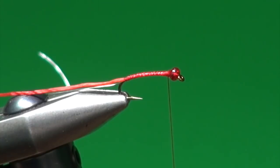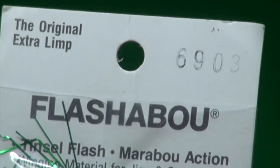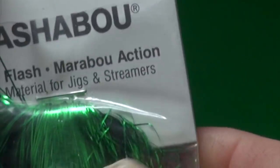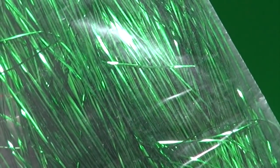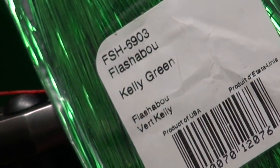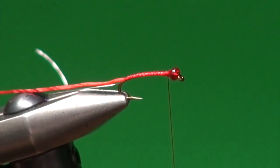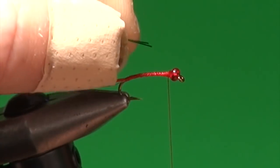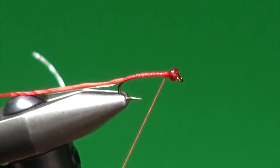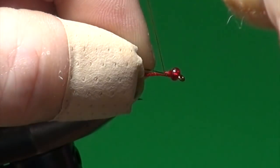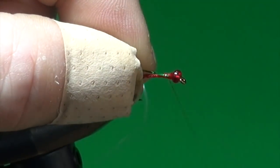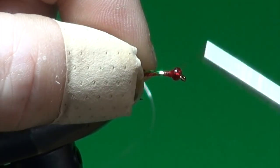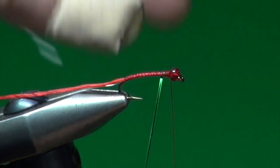Stop just short of the bead. And for the body, it's Flashabou. And in this case, the color is 6903. I believe it's Kelly Green. The number's more important. Kelly Green. I'm just going to take two strands. Moisten them to keep them together. Get them started. And then I'm just going to wind them down the shank.